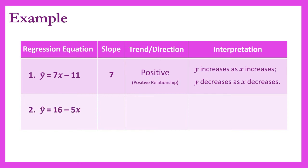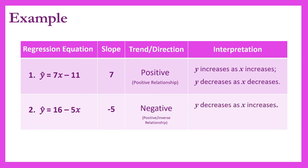For our second equation, we have y-hat equals 16 minus 5x. The slope — the coefficient of x — is negative 5. Since this is negative, the trend or direction is negative. Thus, we have a negative or inverse relationship. We interpret this as: y decreases as x increases, and y increases as x decreases.